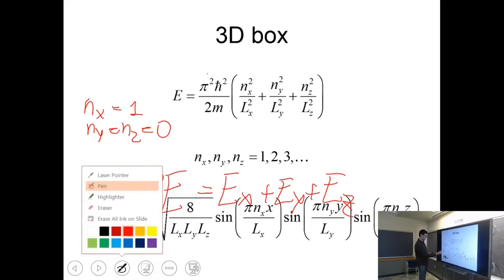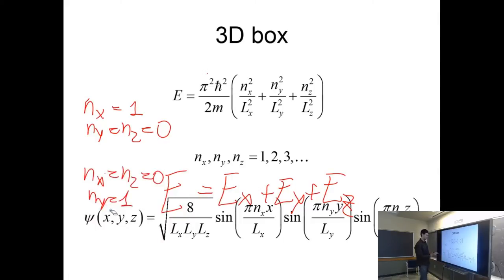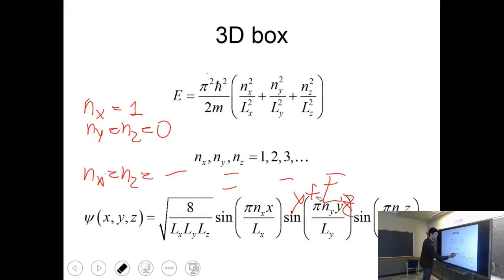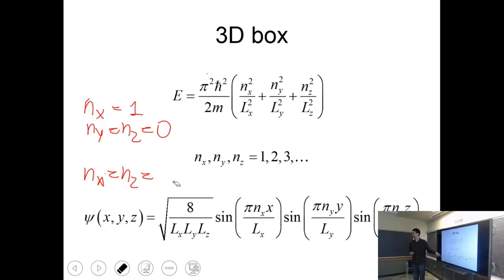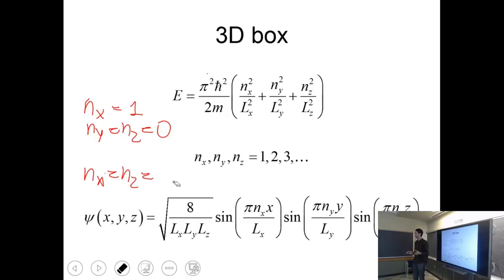The wave functions for a 3D box are products of sine functions with the normalization being the product of the three 1D normalizations: square root of 2/L times sine in x, sine in y, sine in z. Note that it's not always possible to separate variables — it works for a rectangular 3D box but not for an oddly shaped box. So this is just the simplest example.